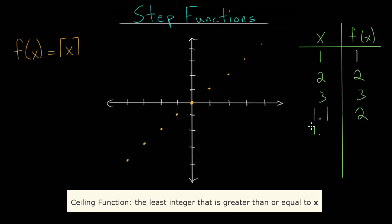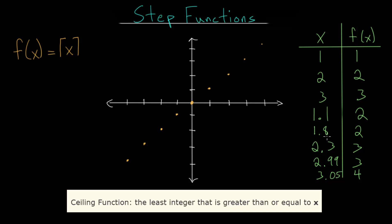We want the least of those integers, so the smallest integer bigger than 1.1 is two. In fact, 1.anything — say 1.8 — the least integer bigger than that is also two. For 2.3 the least integer bigger than it would be three, and 2.99 also returns three. When we move up to 3.05 the least integer greater than that is now four. So the function effectively rounds the number up to the nearest integer.